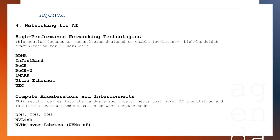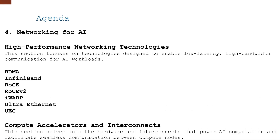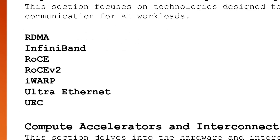Our most extensive and detailed module in this course is Networking for AI. In this module we will focus on the critical role of advanced networking technologies and techniques for AI workflows. In the high-performance networking technology section, I will explain networking technologies designed for low latency and high bandwidth communication — including RDMA, InfiniBand, RoCE, RoCEv2, iVerbs, Ultra Ethernet, and UEC — and how they provide the speed and reliability that AI tasks require, along with guidance on which to choose in which cases.